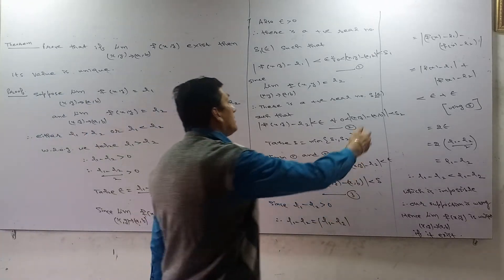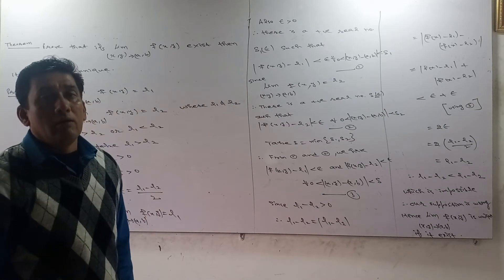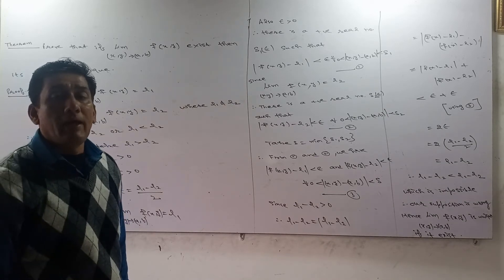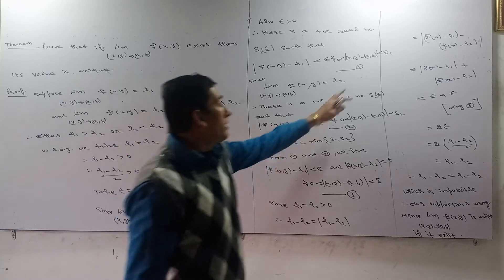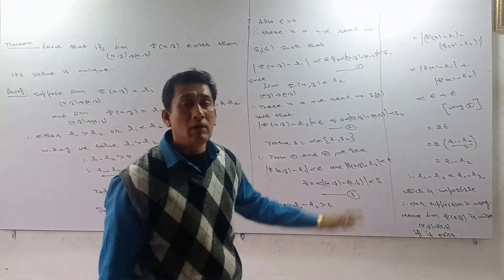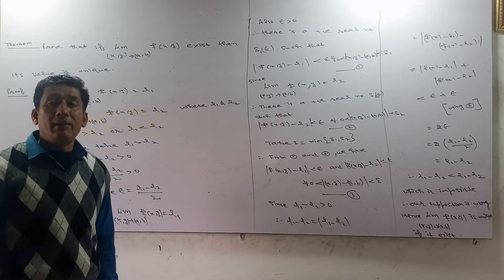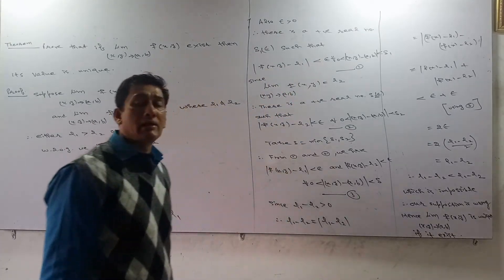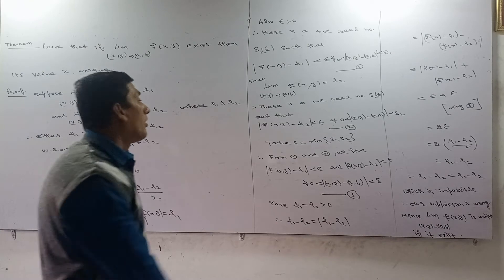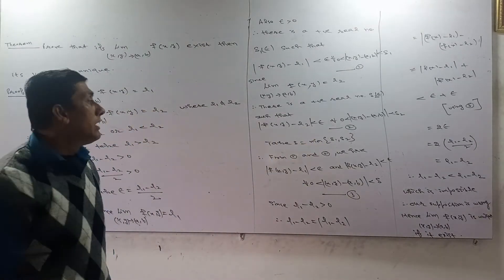So, if we take two circular deleted neighborhoods and take a point (A, B), then the circular deleted neighborhoods of radius delta 1 and delta 2 are considered. We take the first condition that |f(x, y) minus L1| is less than epsilon, and the second condition that |f(x, y) minus L2| is less than epsilon.